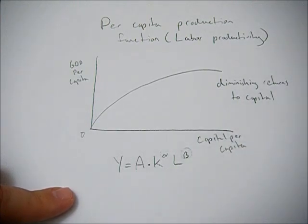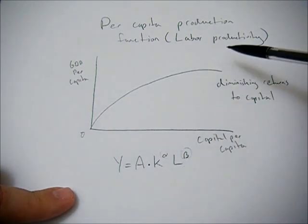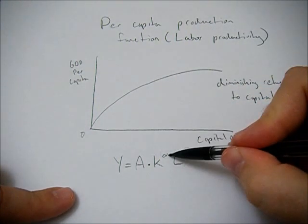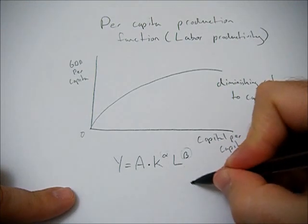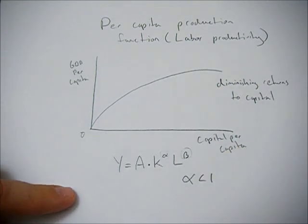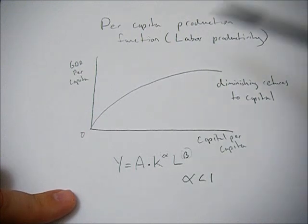The reason we see these diminishing returns to capital is because our coefficient, this alpha here, is less than one. I don't know if that's too much information, so I'm not going to delve into it, but that's the reason we see diminishing returns to capital.